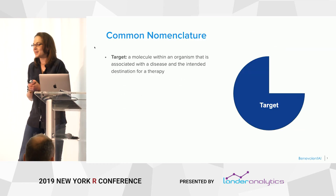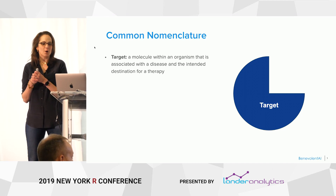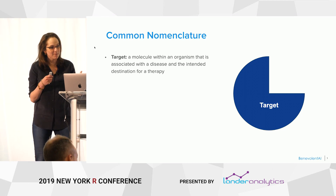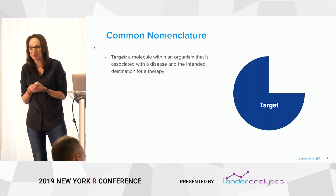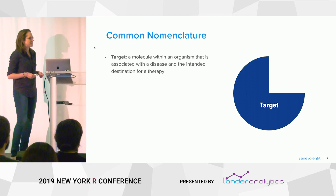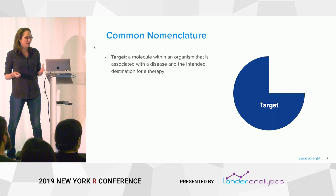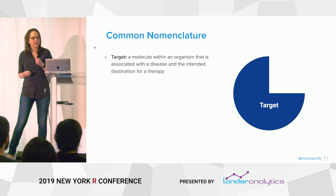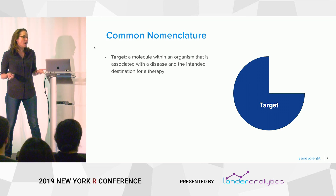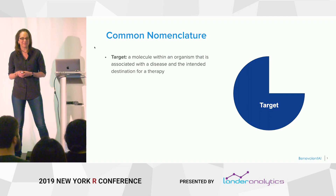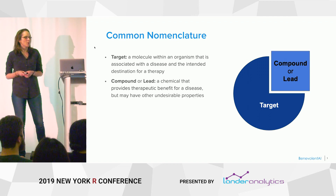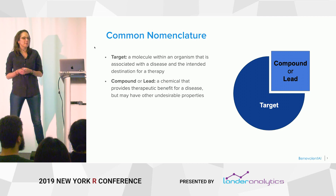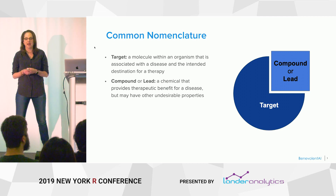A little bit of biochemistry nomenclature. So a target — this may look like the Pac-Man Jared mentioned this morning — is a molecule within an organism that is associated with a disease, and it's the intended destination for a therapy. Often this is actually a protein in real life; it doesn't look like a Pac-Man. A compound or lead is a chemical that binds to this target and will cure or treat a disease.